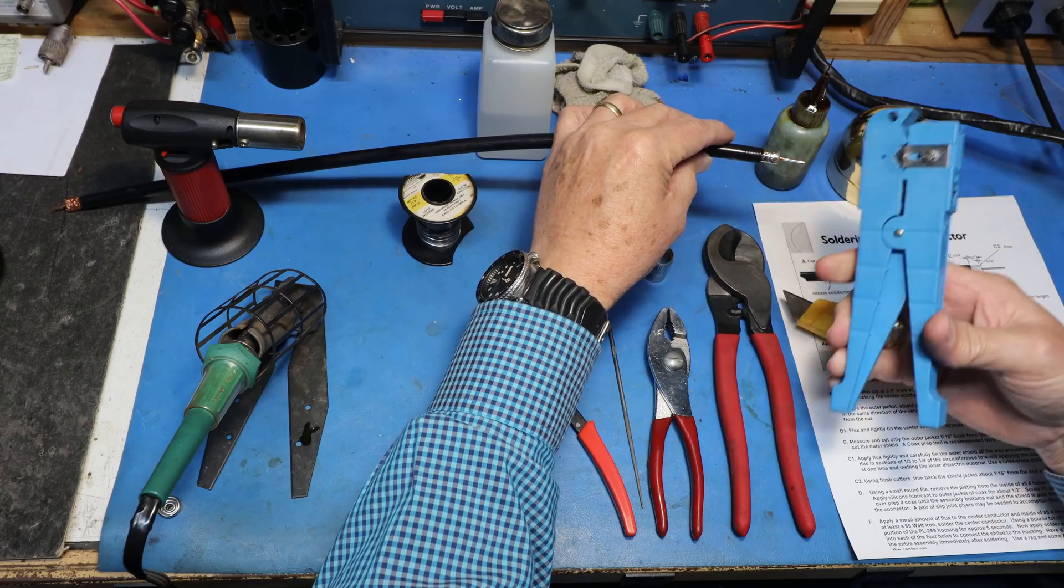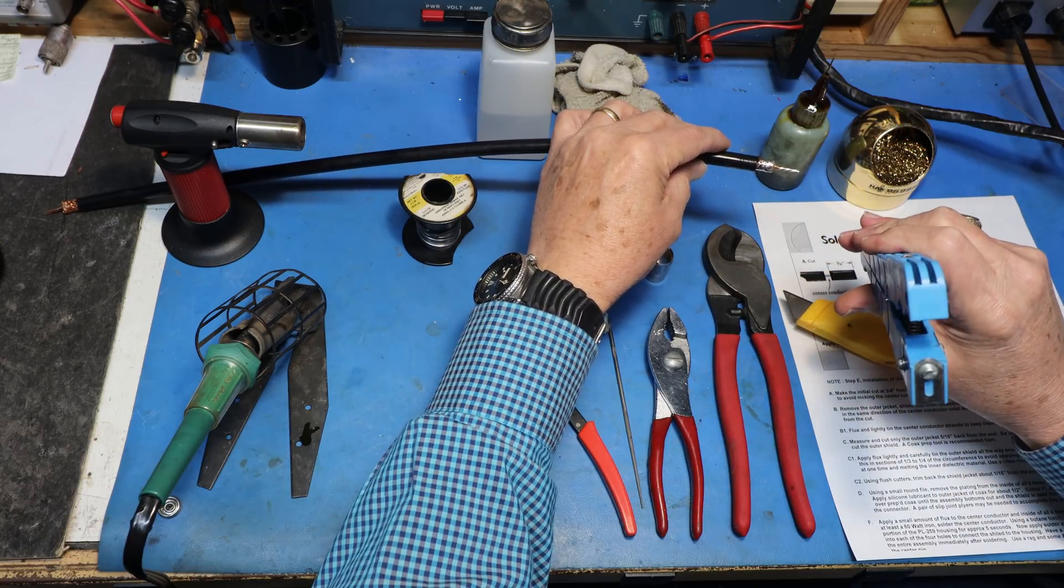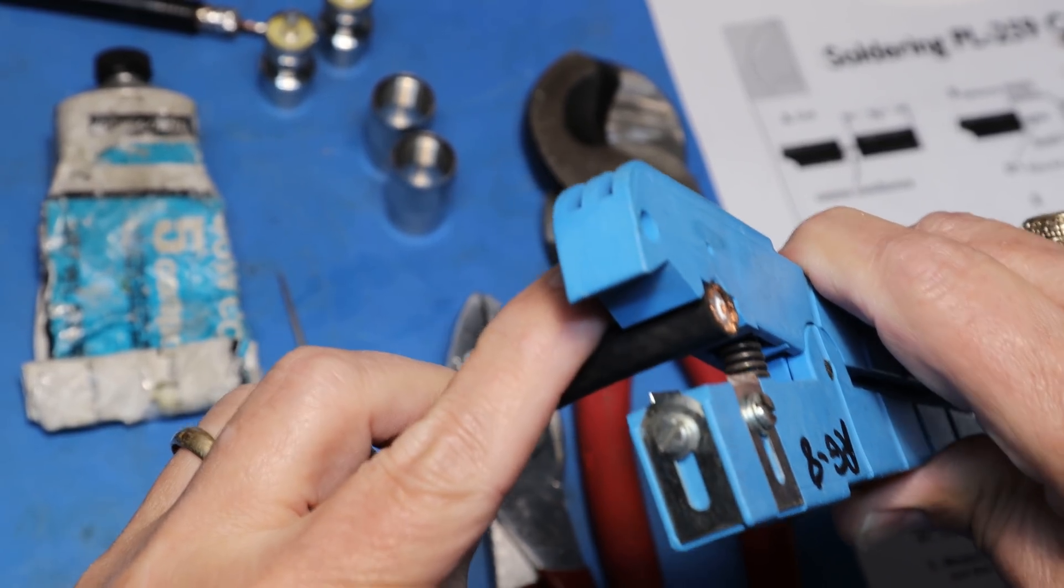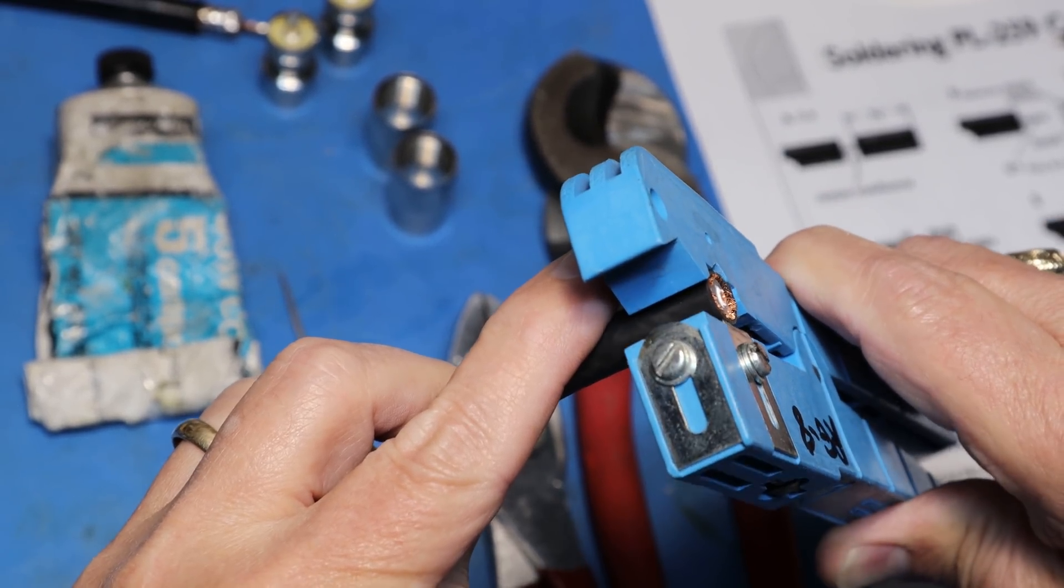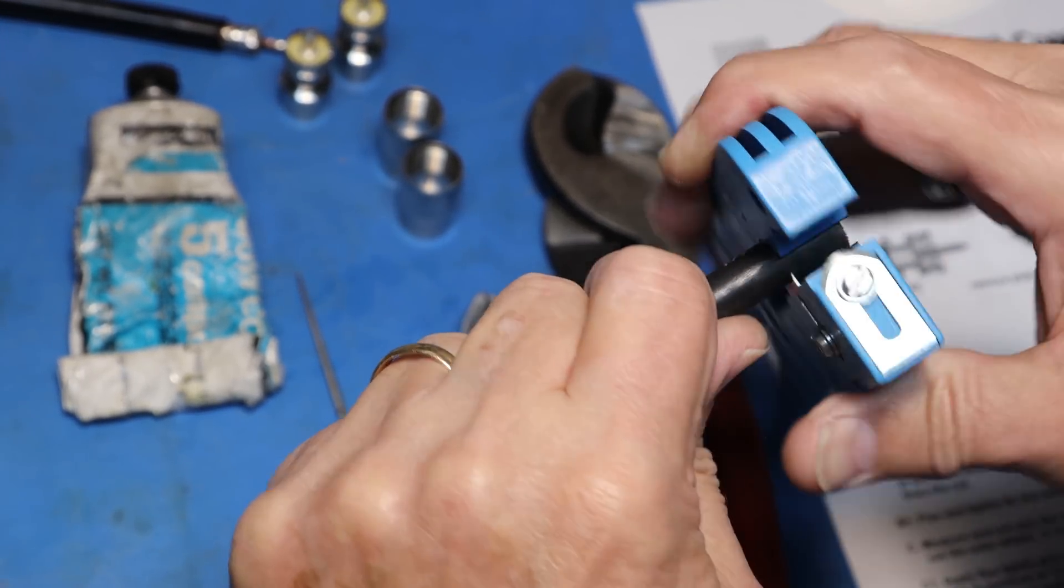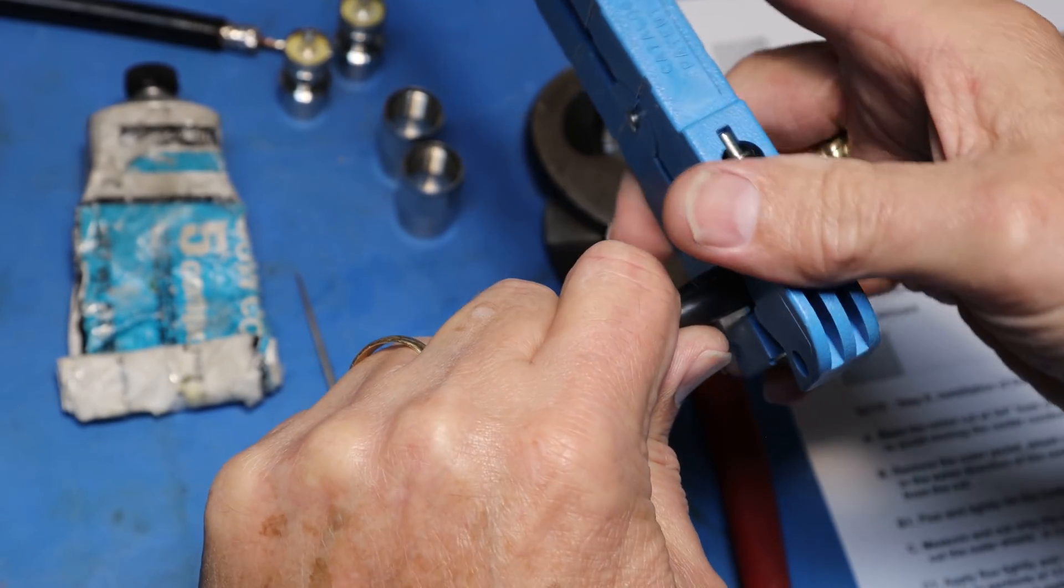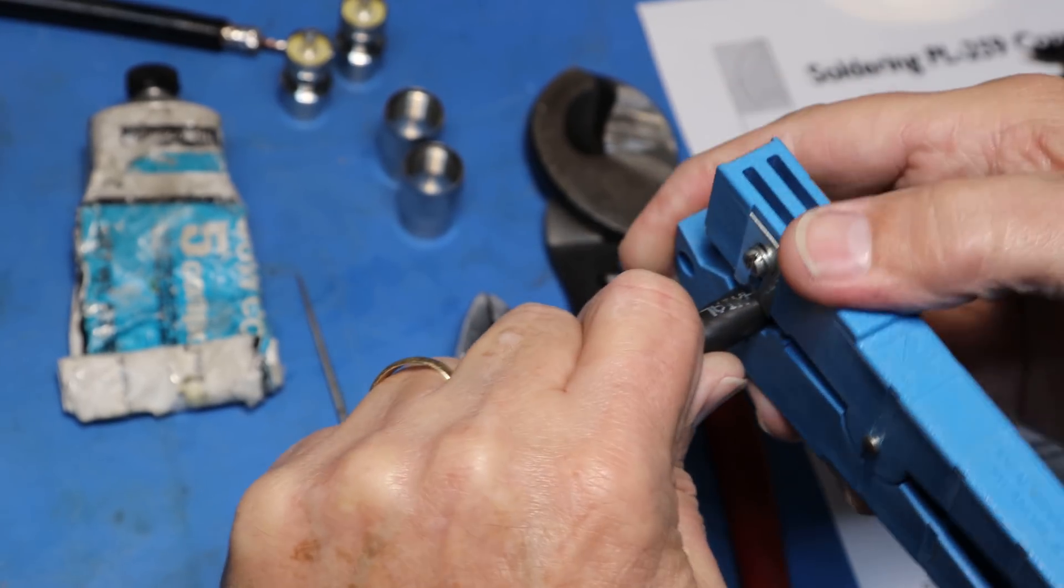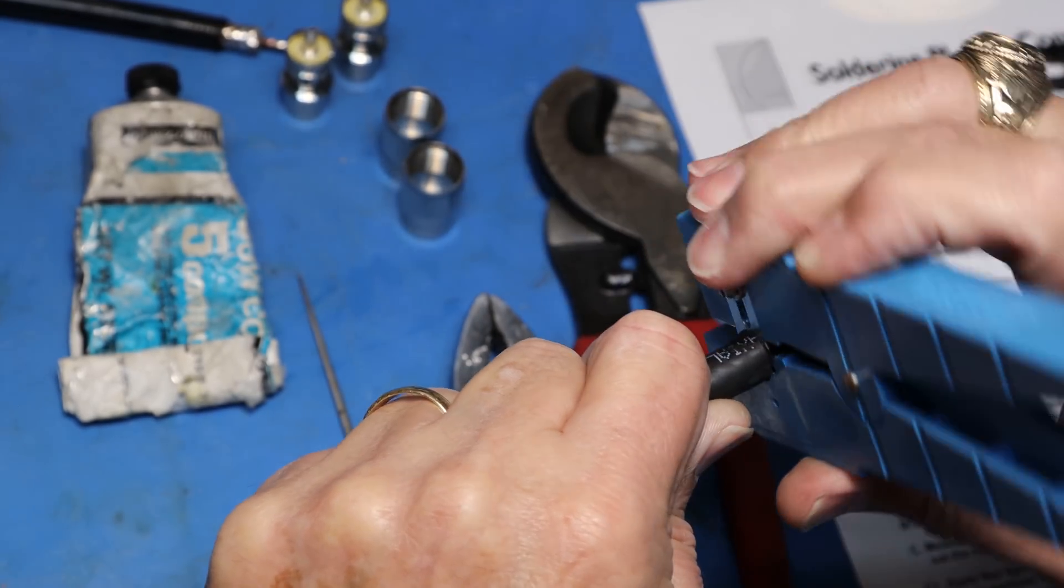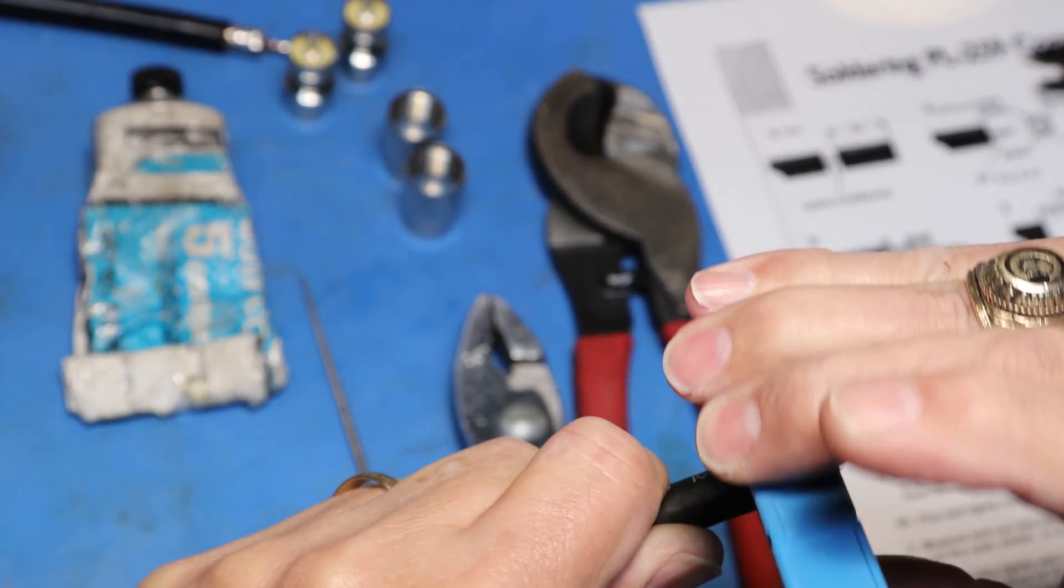The first way I will demonstrate preparing the coax is using the prep tool. It is a faster, safer, and more accurate way to prepare the coax. Place the coax in the prep tool with the longer blade away from the end that is cut. Once seated, rock the tool back and forth, cutting through the outer jacket, braid, and center dielectric. It may take several twists to get completely through to the center conductor. The nice thing about using this prep tool is that it is set up to not damage the center conductor.